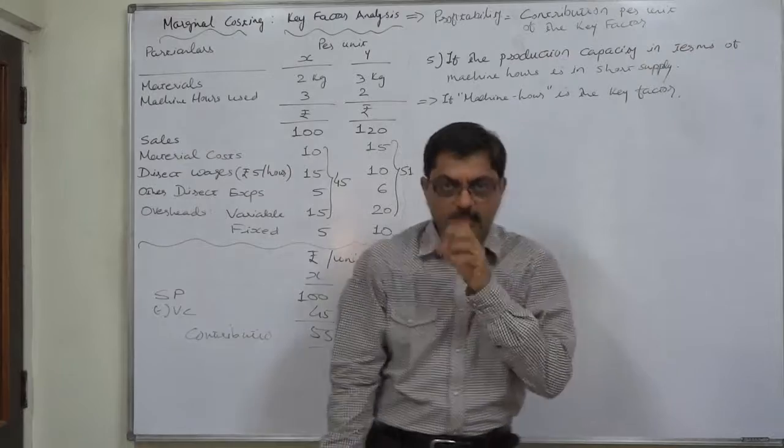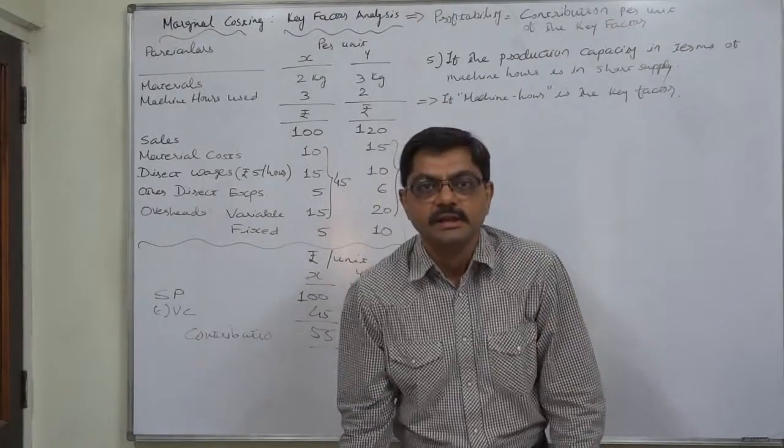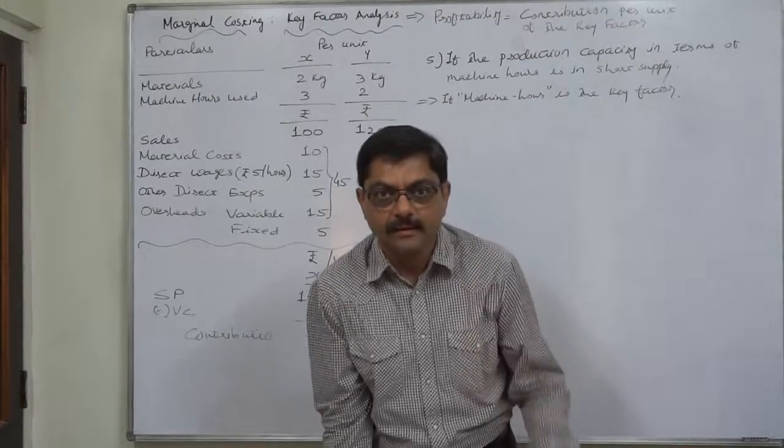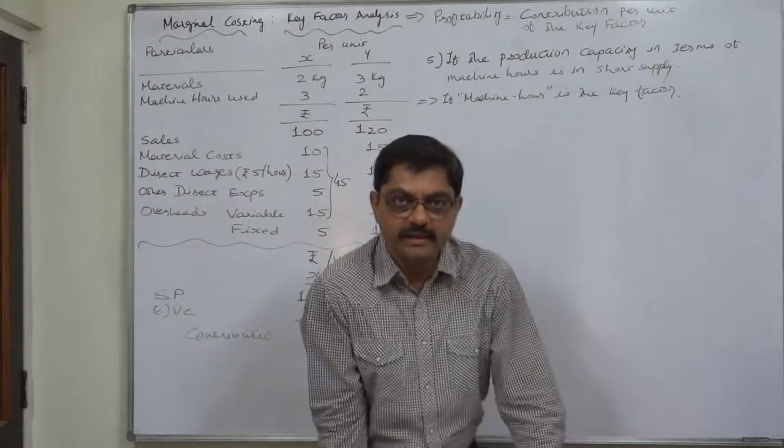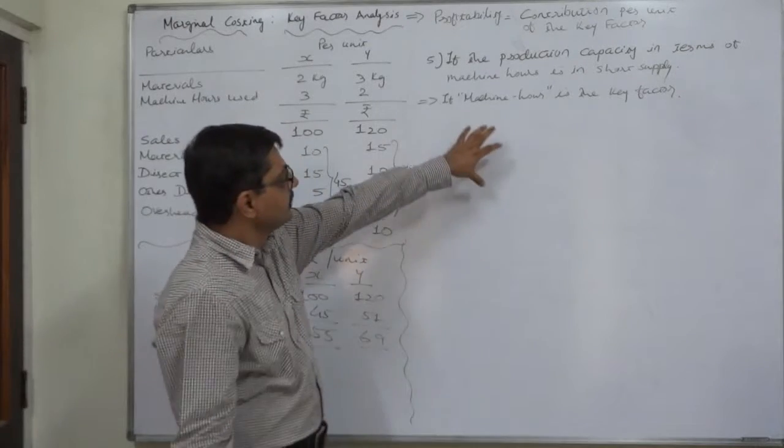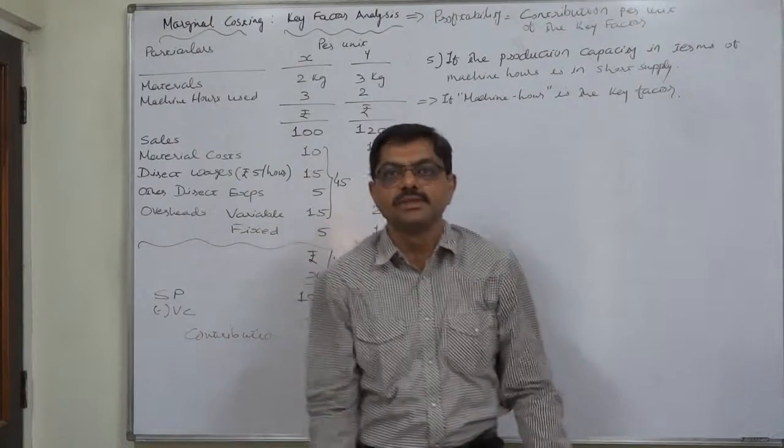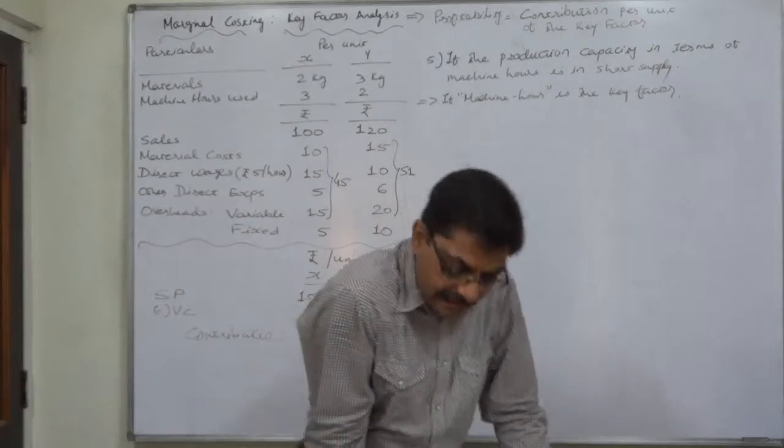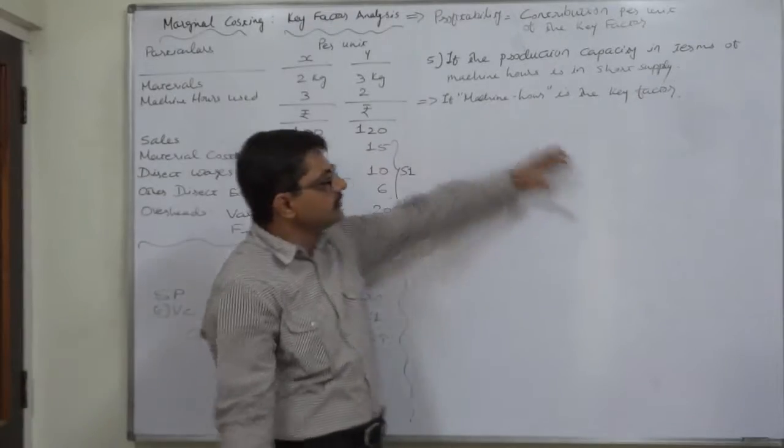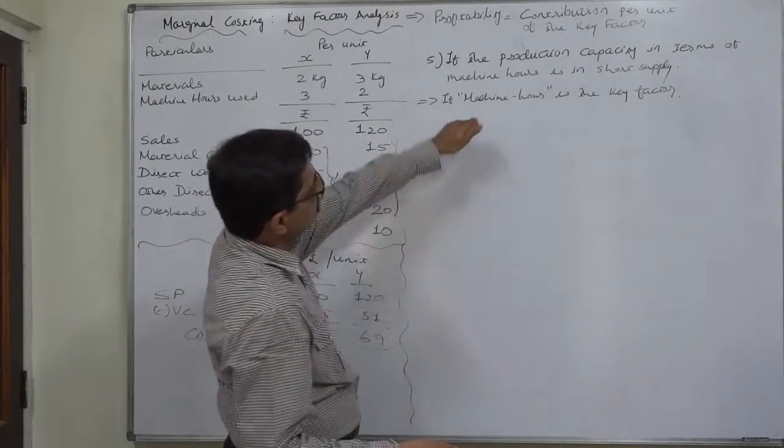When some machines need specific skill and the workers having this particular skill are in short supply, we can say that the machine capacity or the skill of operating the machinery is in short supply. In short, machine hour becomes the key factor when machine hours are in short supply.